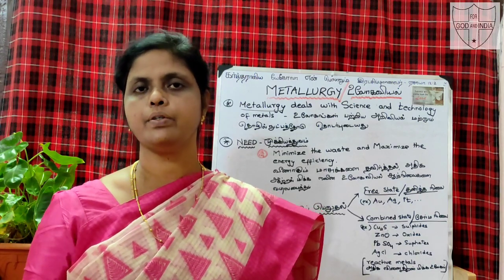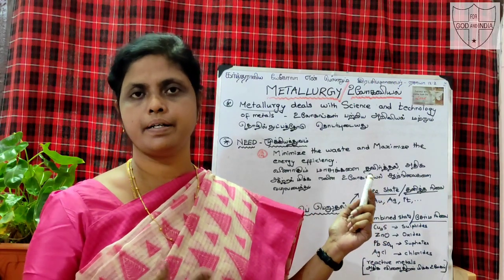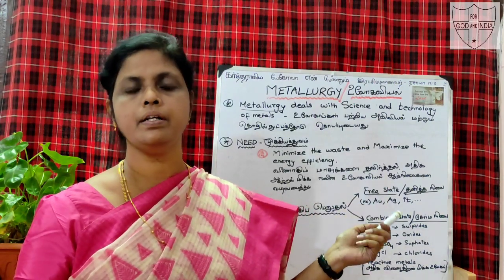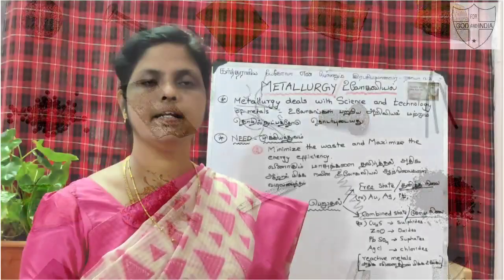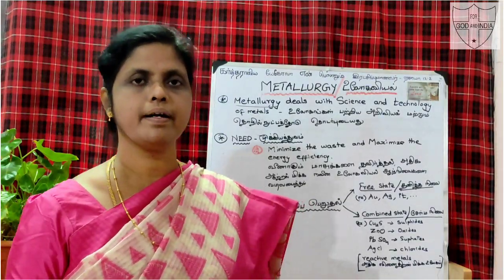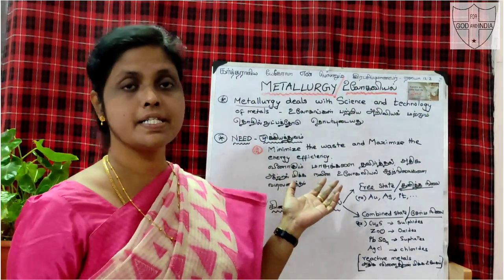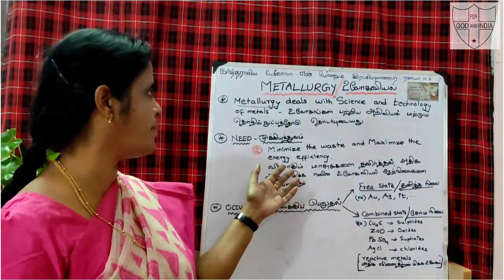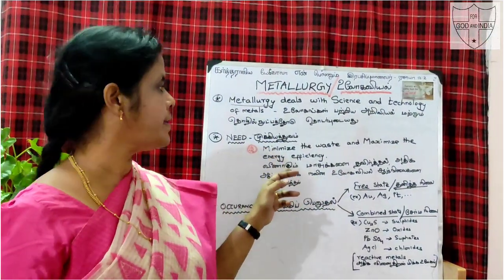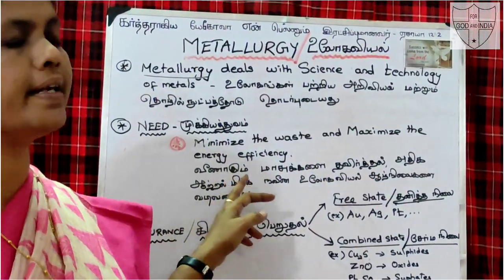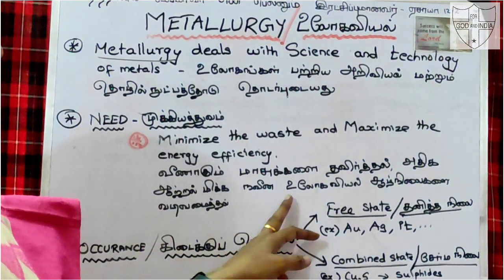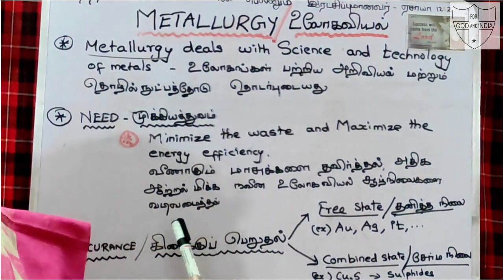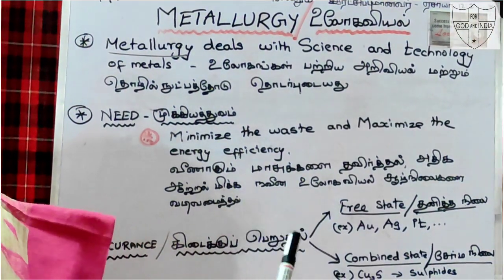Now we have to deal with the metallurgy advancement. We have to deal with alloys. Alloys are important for metallurgy. Now we are going to study metallurgy — to minimize waste and maximize energy efficiency. That is why we are going to study metallurgy.